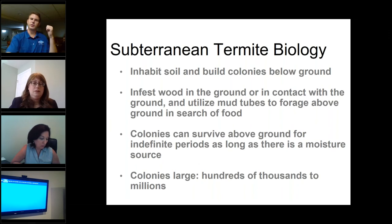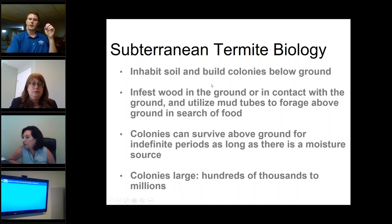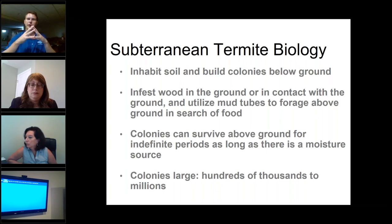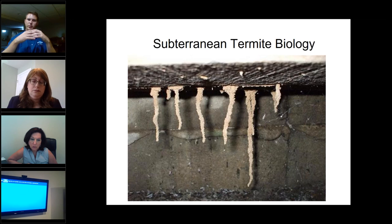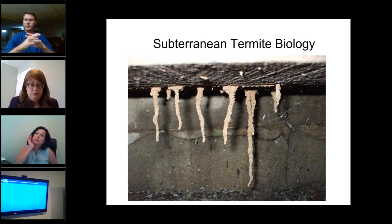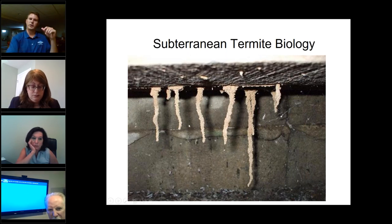Subterranean termites are what we have here in New Jersey. They inhabit soil — hence their name. They infest wood in the ground or in contact with the ground, and they utilize mud tubes to forage above the ground in search of food. They have to keep a very high humidity level or they dry out and die. Mud tubes are hollow tubes that termites travel inside; they're hollow so the termites can keep their moisture content very high while above ground. Because if subterranean termites in New Jersey were just in regular air, they would dry out and die quickly. These mud tubes are what you sometimes find in home inspections and are a telltale sign that a building has a termite problem.